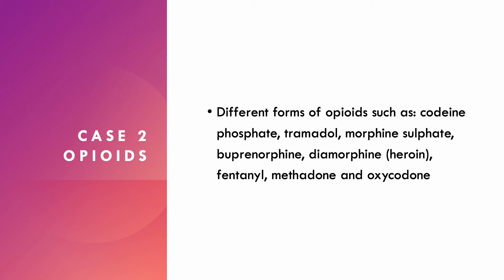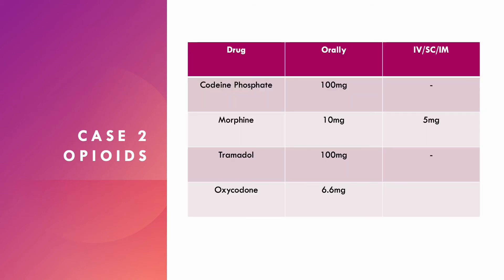Different forms of opioids: codeine and tramadol are weak opioids. Morphine sulfate is a commonly used strong opioid, good for severe pain. Buprenorphine is an alternative to morphine with a longer duration of action. Diamorphine is heroin. Fentanyl is commonly used intraoperatively but can also be used as a patch. Methadone is a longer-acting opioid commonly used to prevent withdrawal from heroin. Oxycodone has a similar profile to morphine but can be used in severe renal disease. Looking at the drug conversion table: 100mg codeine phosphate orally equals 10mg oral morphine, 5mg IV or subcutaneous or IM morphine. Tramadol equivalence is the same as codeine; oxycodone is 6.6. If changing from oral to intramuscular or subcutaneous morphine, you need to halve the dose.